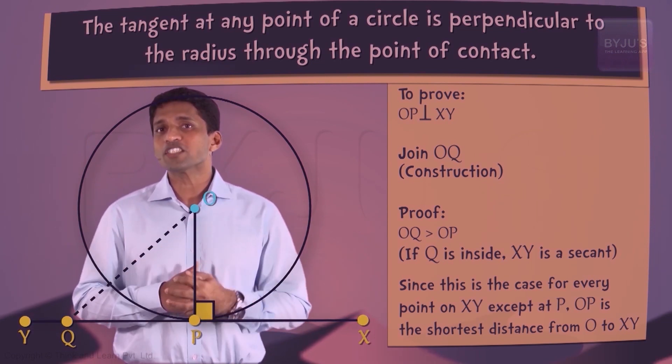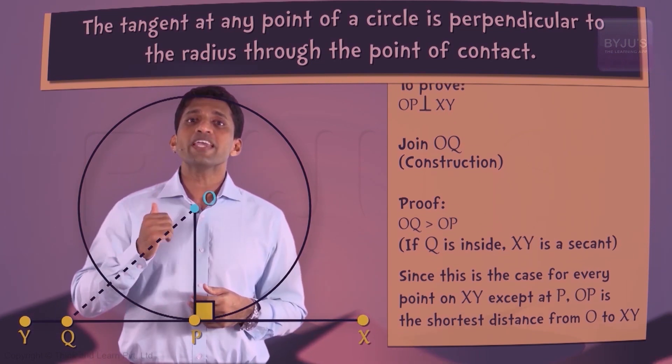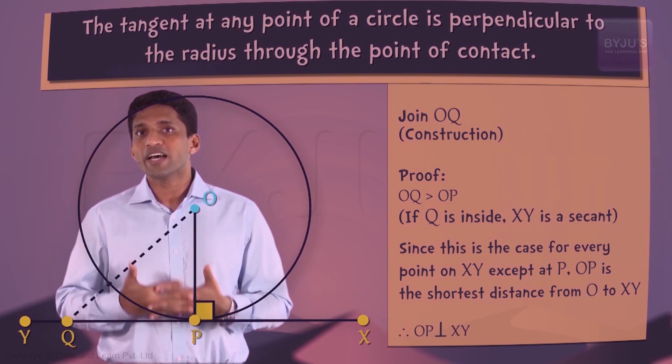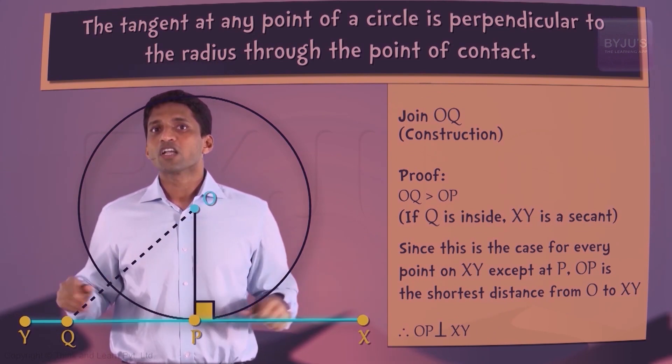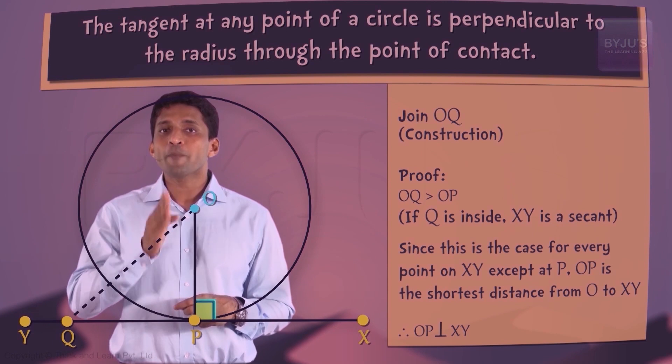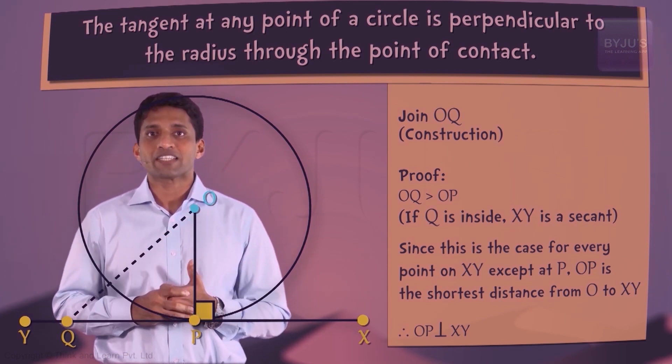In other words, what is the meaning of shortest distance? In other words, OP is perpendicular to XY, that is, a tangent is perpendicular to the radius at the point of contact.